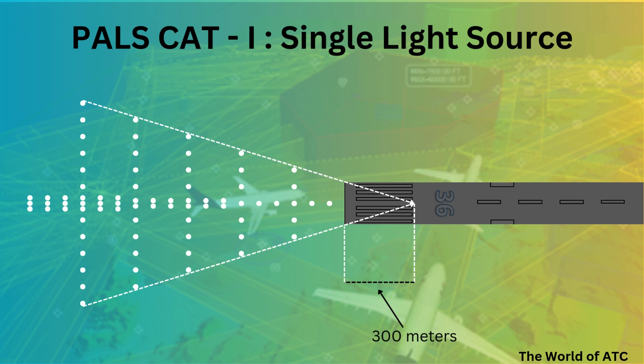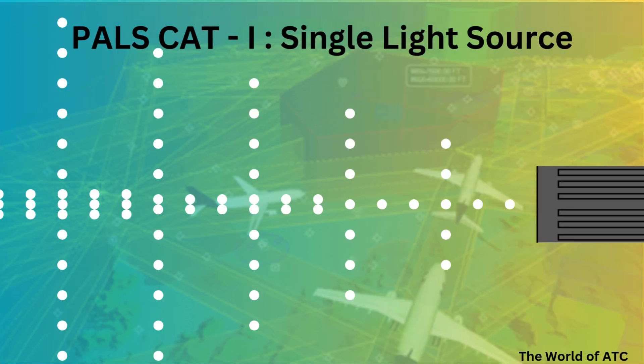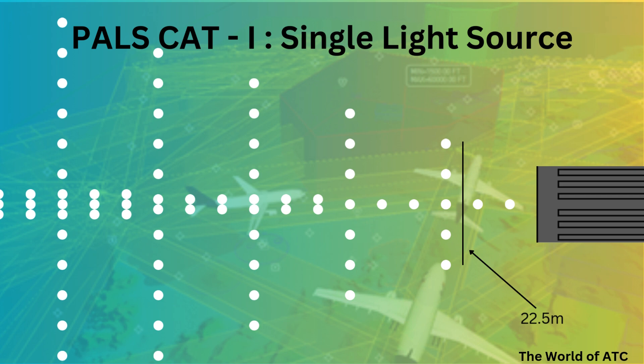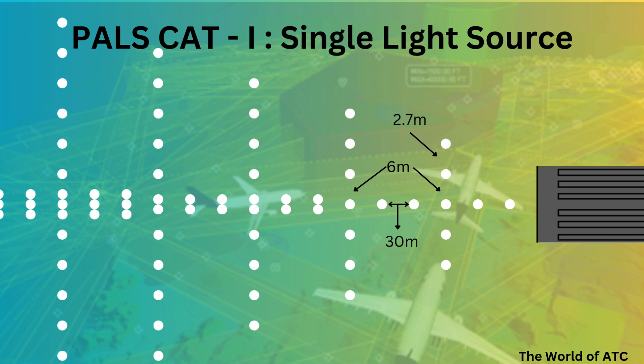Now let's zoom in for the distance-coded diagram of the precision approach Cat 1 lighting system. In this single light-based system, the distance between the centerline lights would be 30 meters throughout the entire 900-meter length. From the threshold, the first light is installed at 30 meters and the second at 60 meters. Then there is the first crossbar, having a length of 22.5 meters. The distance between the lights of the crossbar shall be 2.7 meters, and the distance between the crossbar lights and the centerline lights shall not be more than 6 meters in any case.